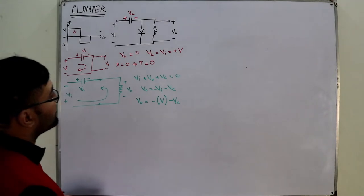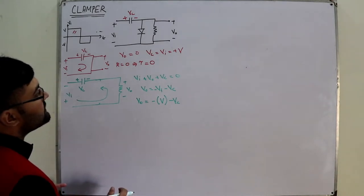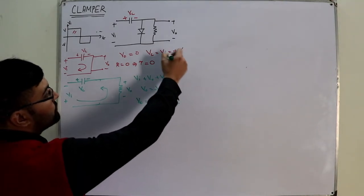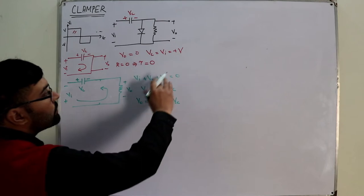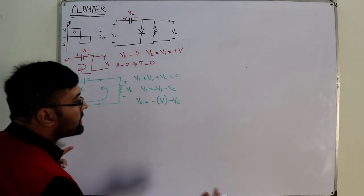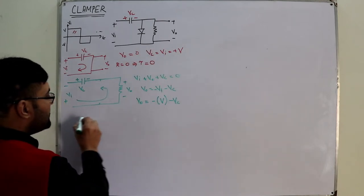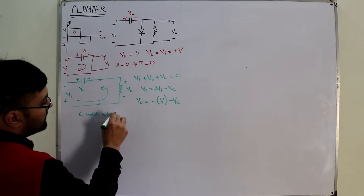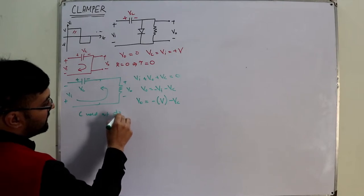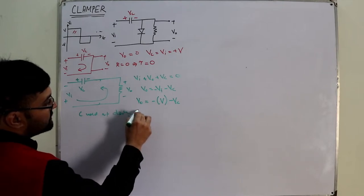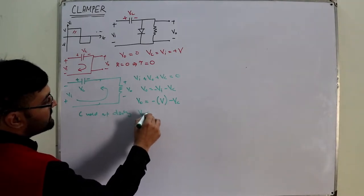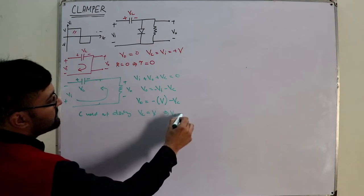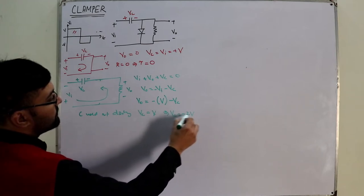VC — you've already seen — is plus V. And it would not discharge, so the capacitor C would not discharge. Which means VC is equal to V as well. So this implies that the output is equal to minus 2V.